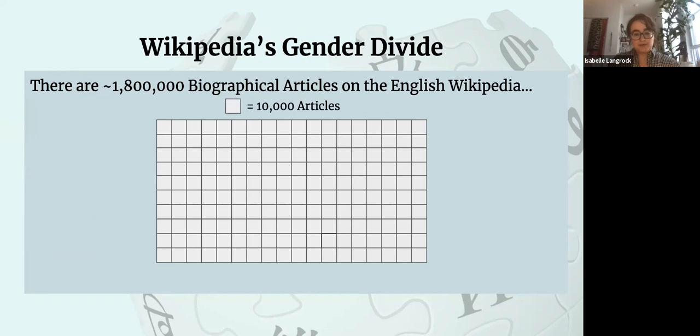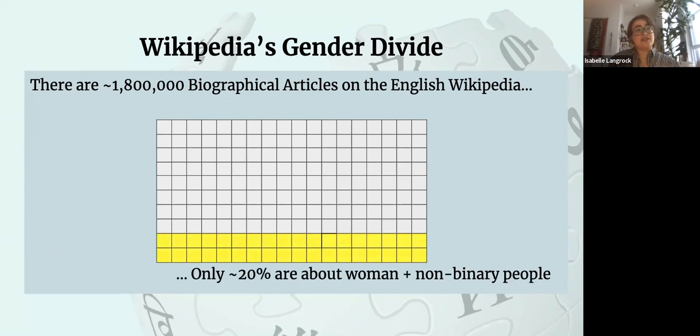So as many of you I'm sure are familiar, Wikipedia has a large content gender divide. There's about 1.8 million biographical articles on the English version of Wikipedia. However, only 20% are about women and non-binary people. So this gap is more than a million articles large. We would need to add over a million articles to even start to approach an equity benchmark.